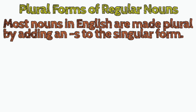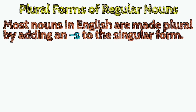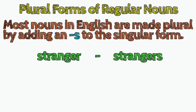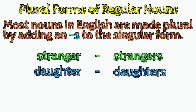First, most nouns in English are made plural by adding an S to the singular form. Examples: stranger, strangers; daughter, daughters; student, students.